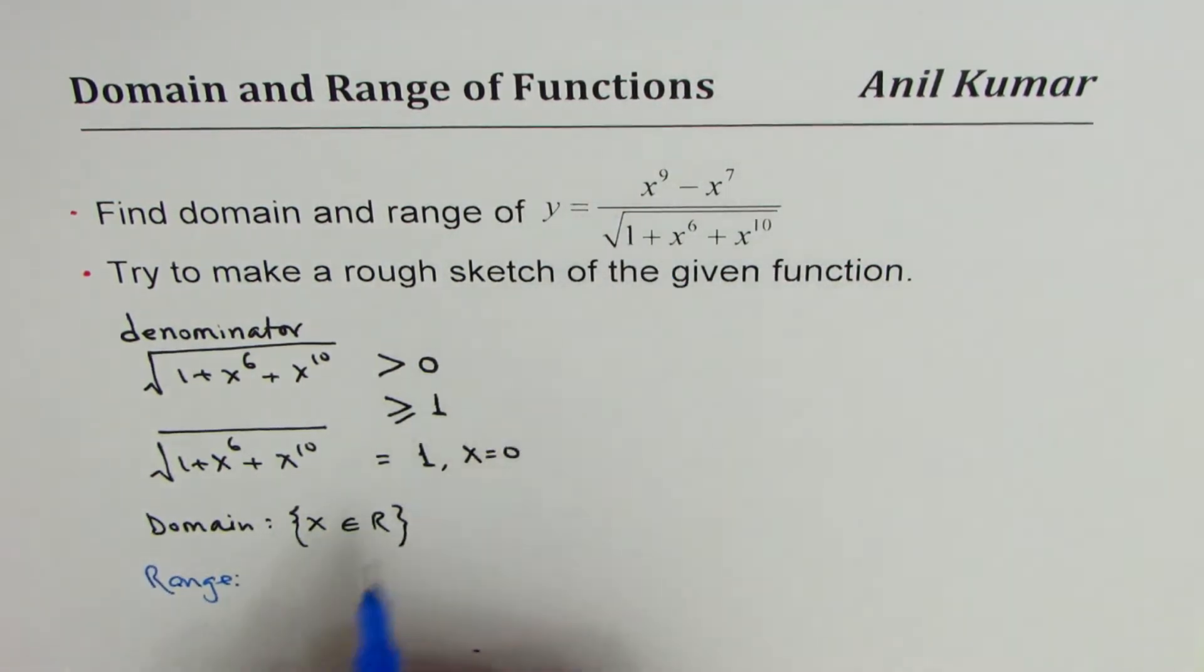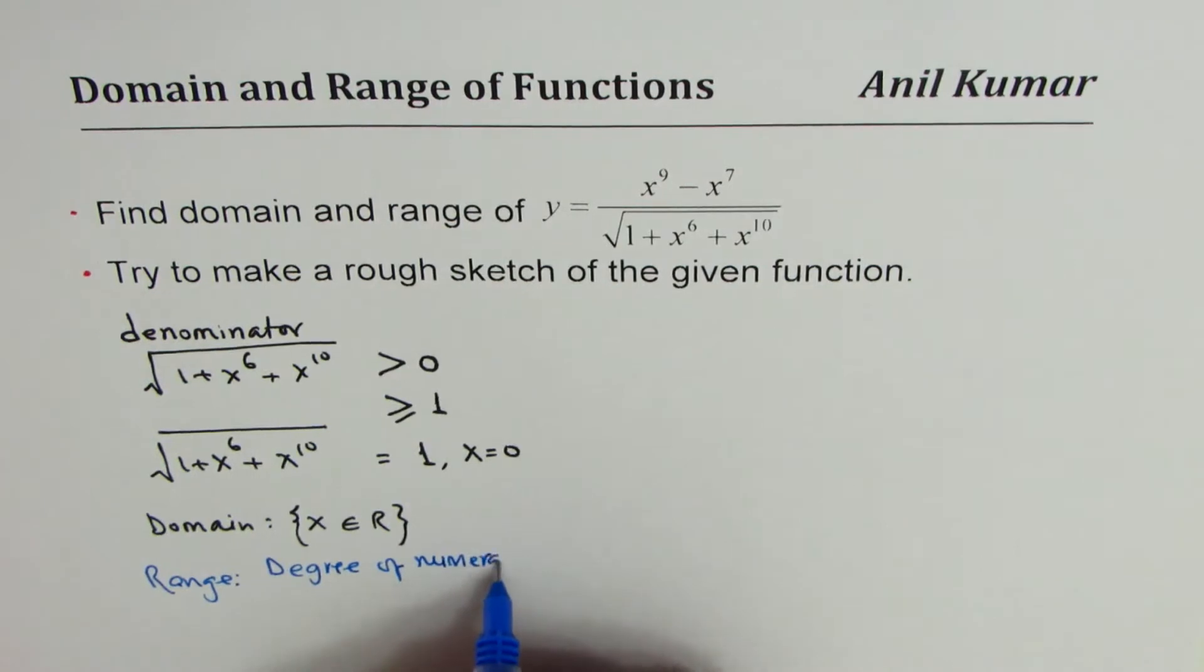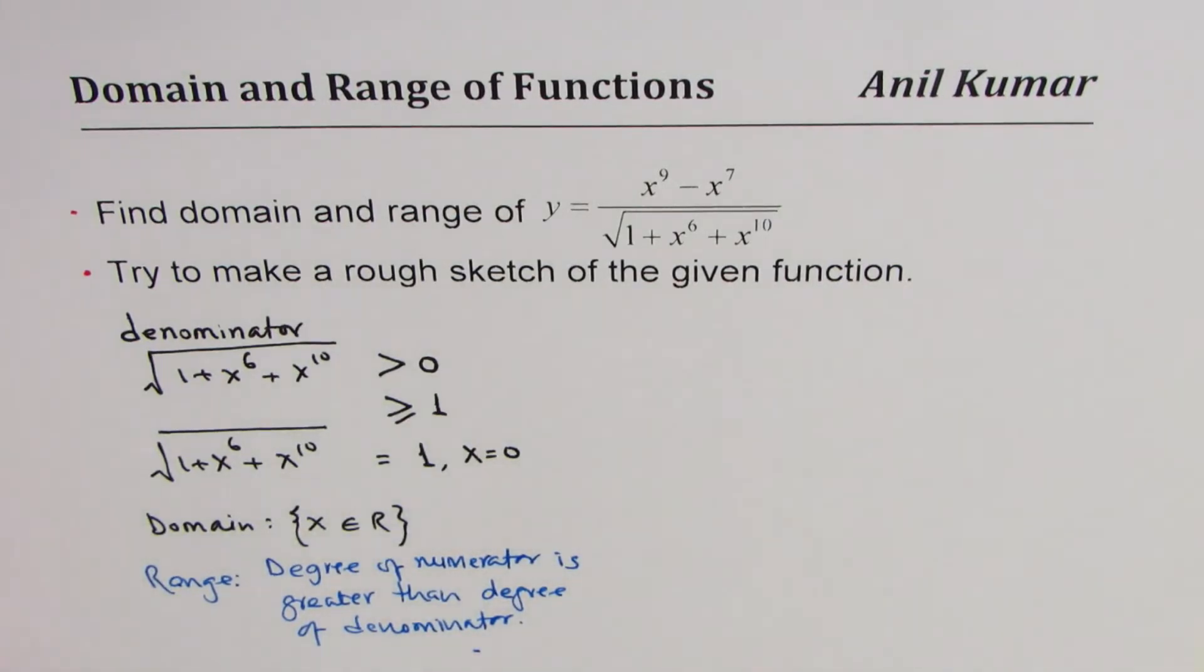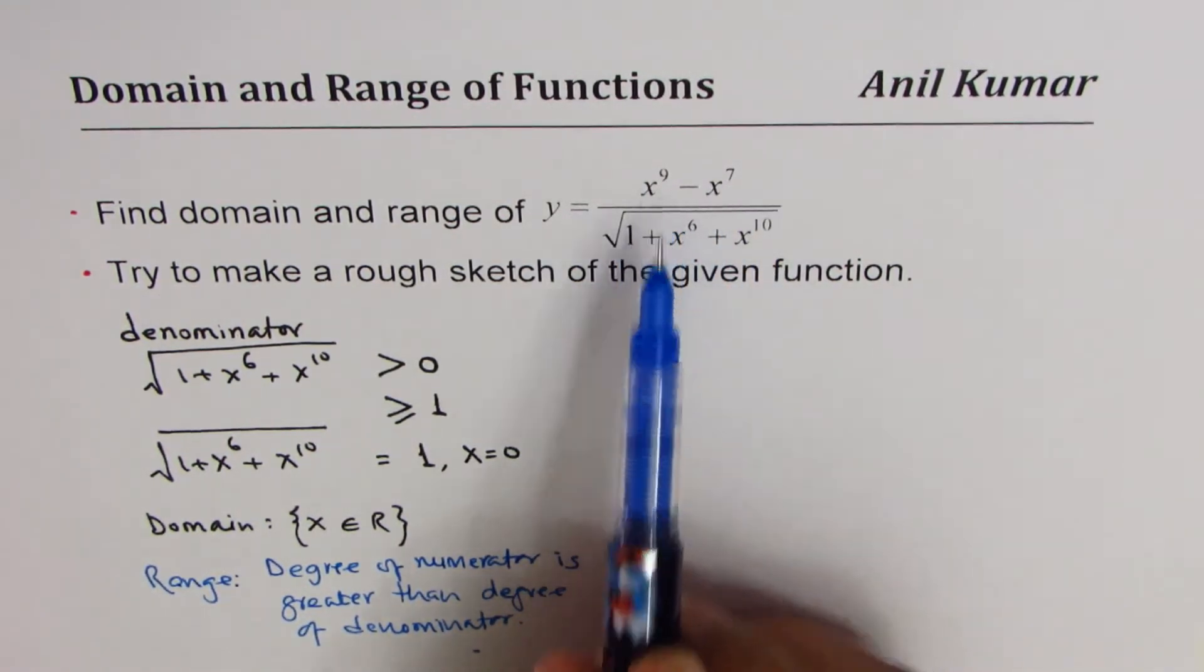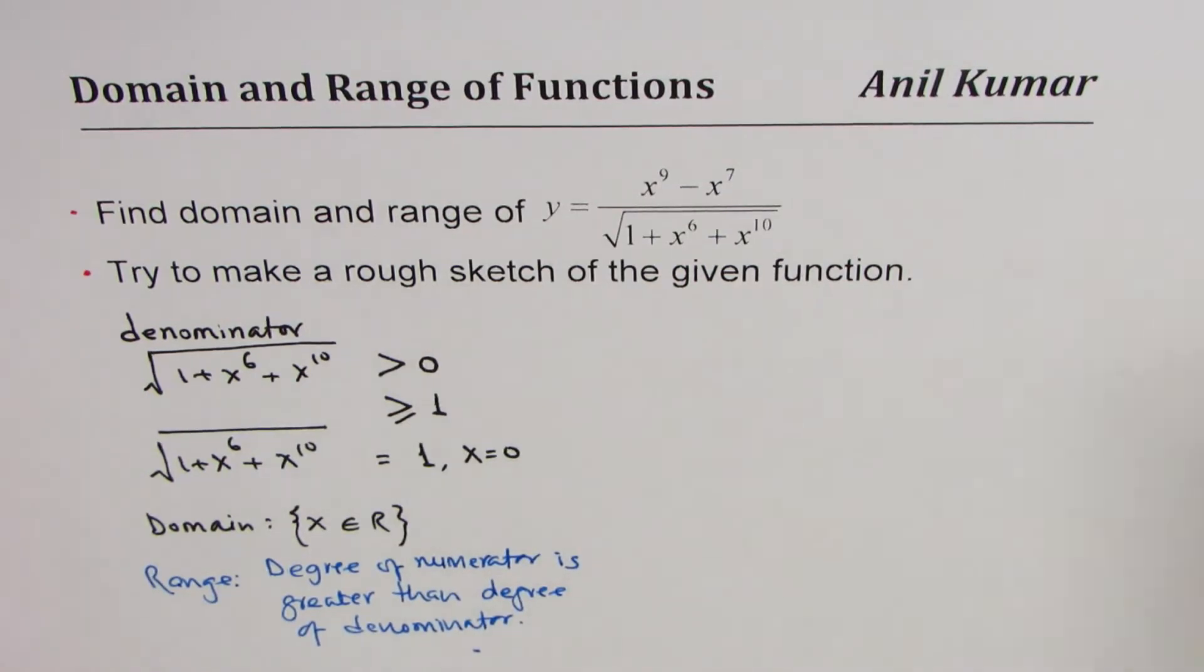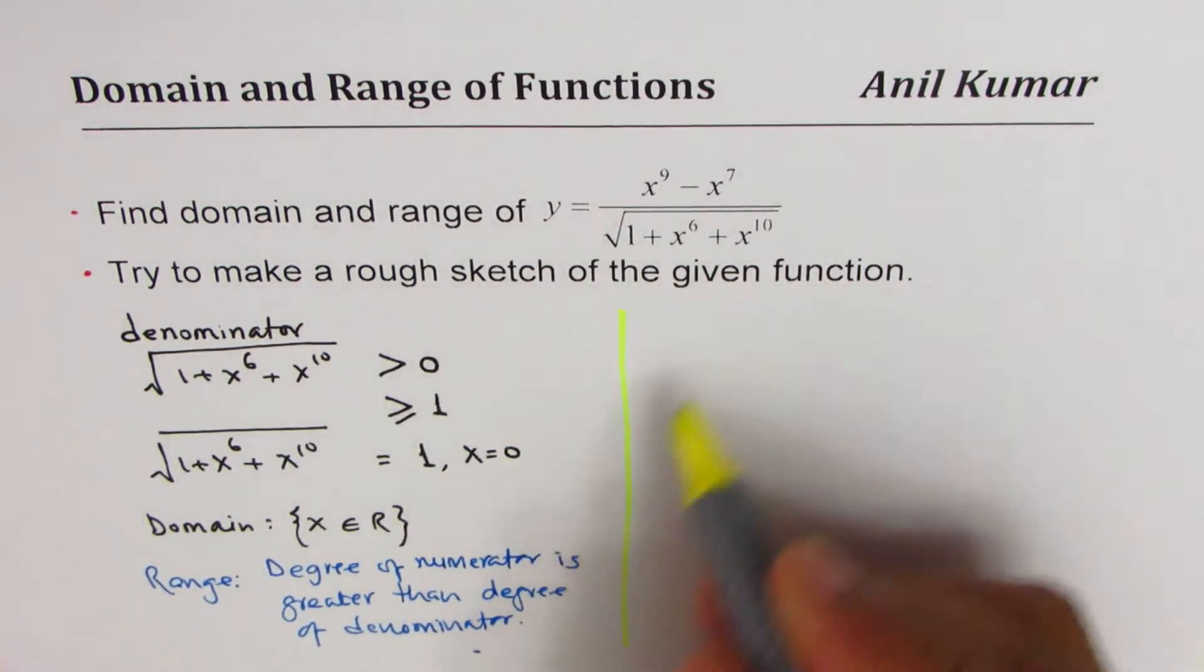What you notice here is that the degree of numerator is greater than degree of denominator. So that means that in this case, as x approaches large value, the behavior of the curve will be similar to the behavior of numerator. Now what does that mean?